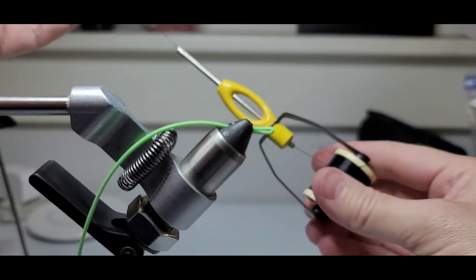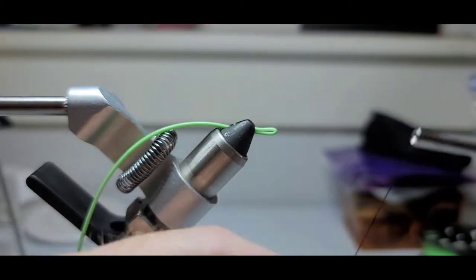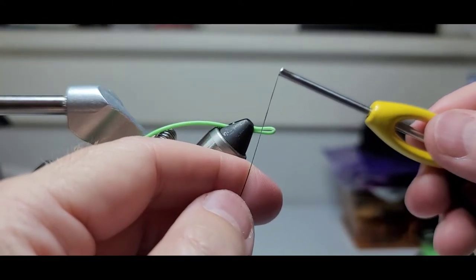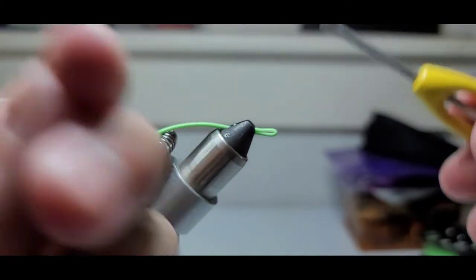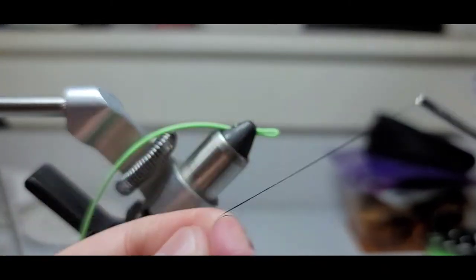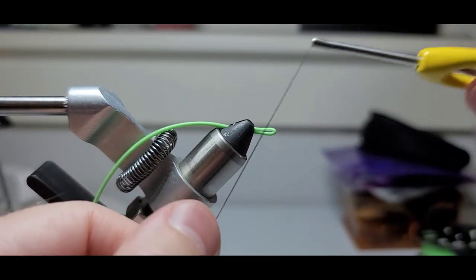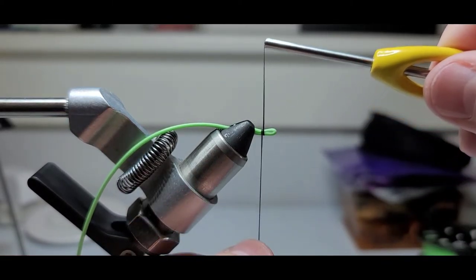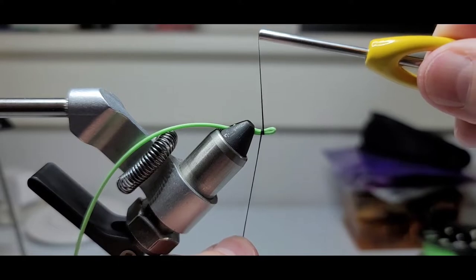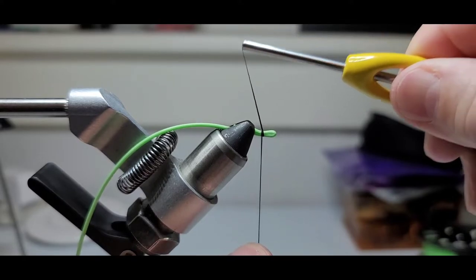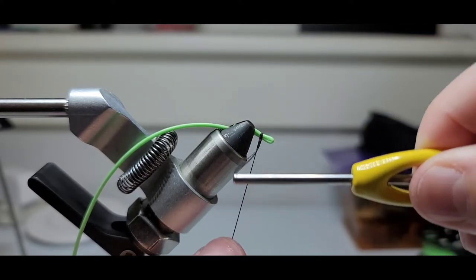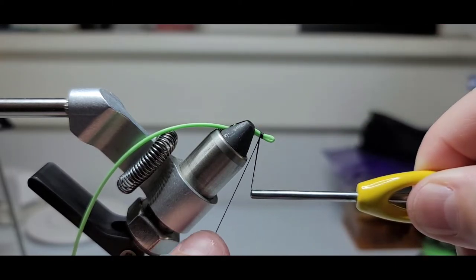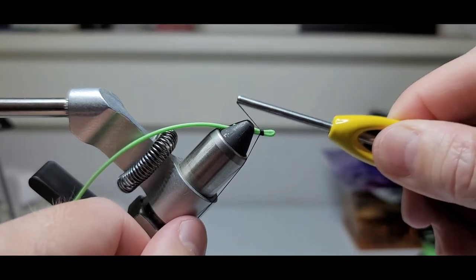Next we're gonna take some black thread and our bobbin, fly tying bobbin. If you don't have one of these, I'll try to remember to link one down below. They're pretty cheap. We're gonna wrap our finger around this tag end, run one overhand, pull up with my bobbin and pull down with my hand, and wrap slowly back.